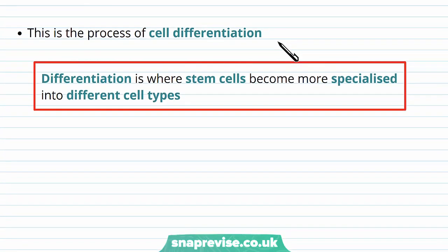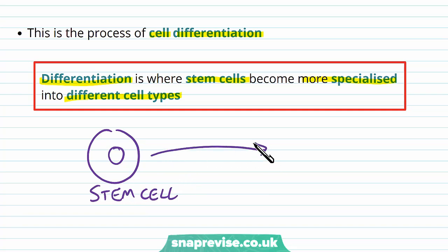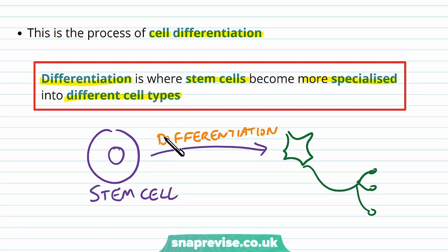The process of this specialization is given the term cell differentiation. Differentiation is where stem cells become more specialized into different cell types. For example, if you had a stem cell, it would then specialize into a particular type of cell like a neuron. Similarly to how when you differentiate between two things you make it clear which is which, differentiation is making it clear which type of cell this cell needs to become.